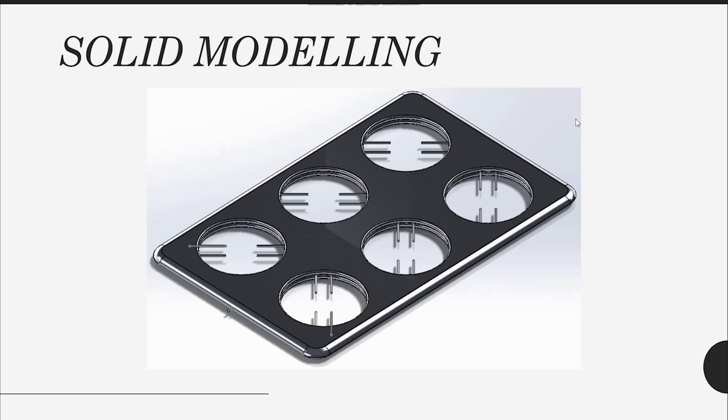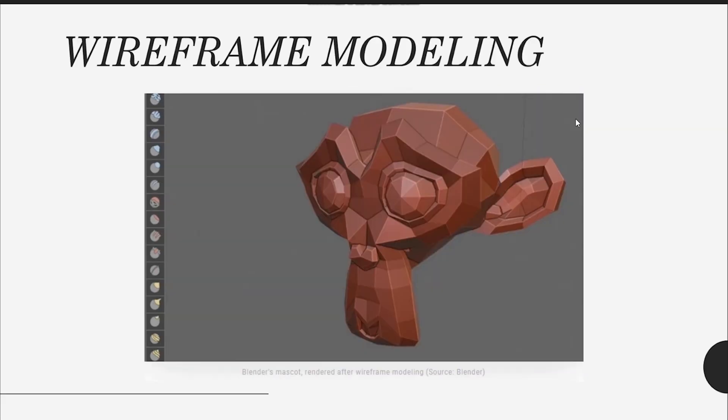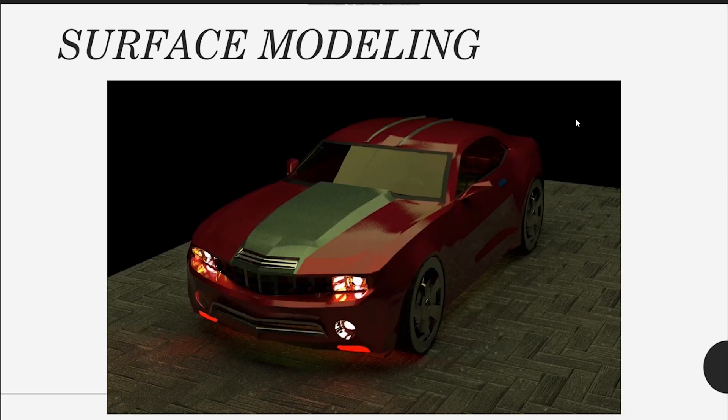The next one is wireframe modeling, which is a little bit trickier than solid modeling. Software like ZBrush and Blender actually use this type. It is used to make complex forms, and sculpting kinds of things can be done with wireframe software.